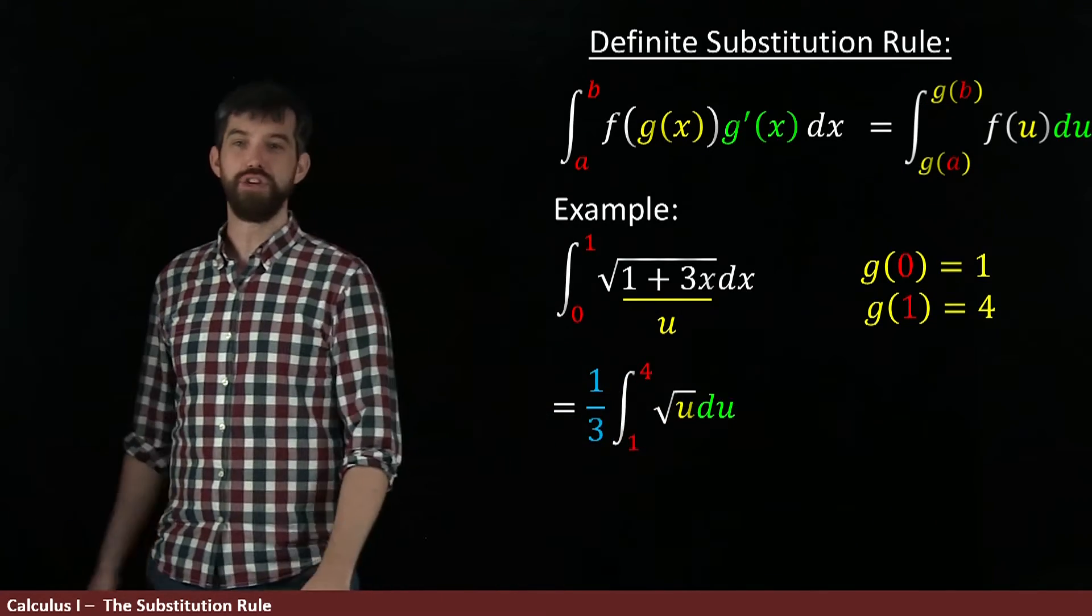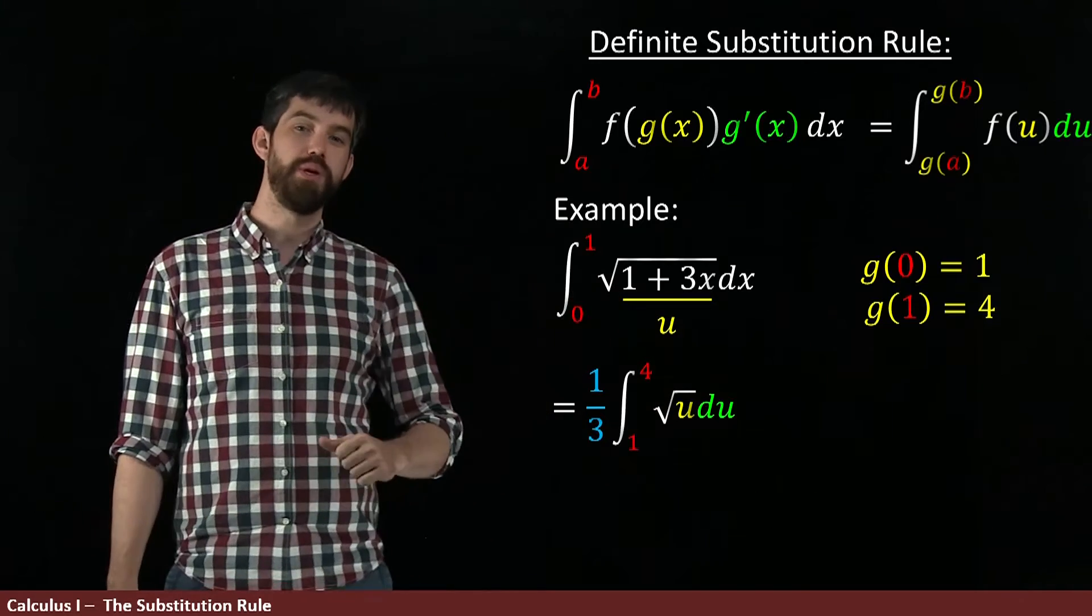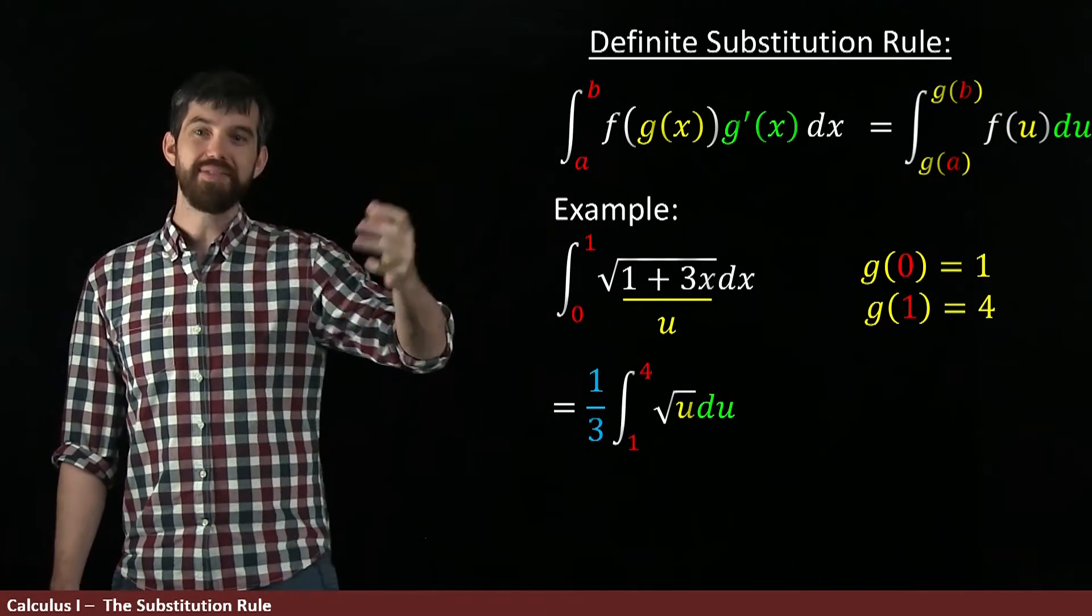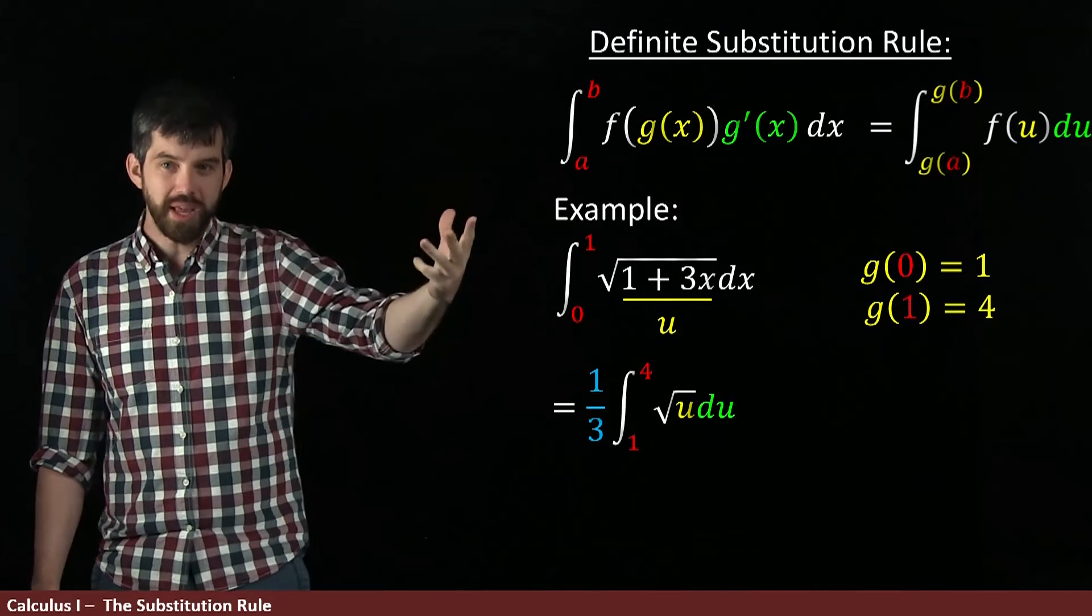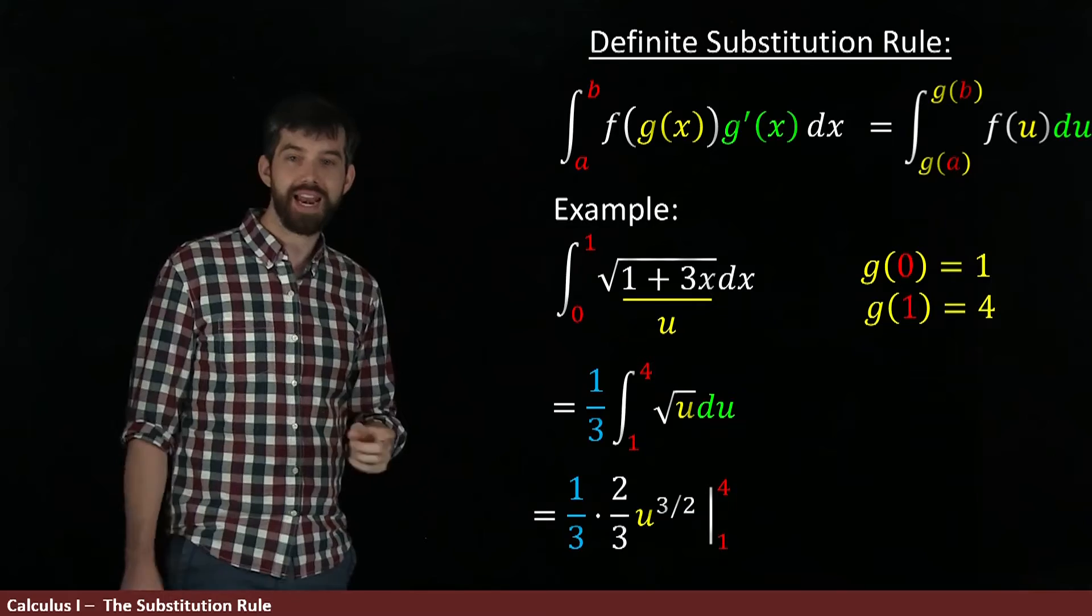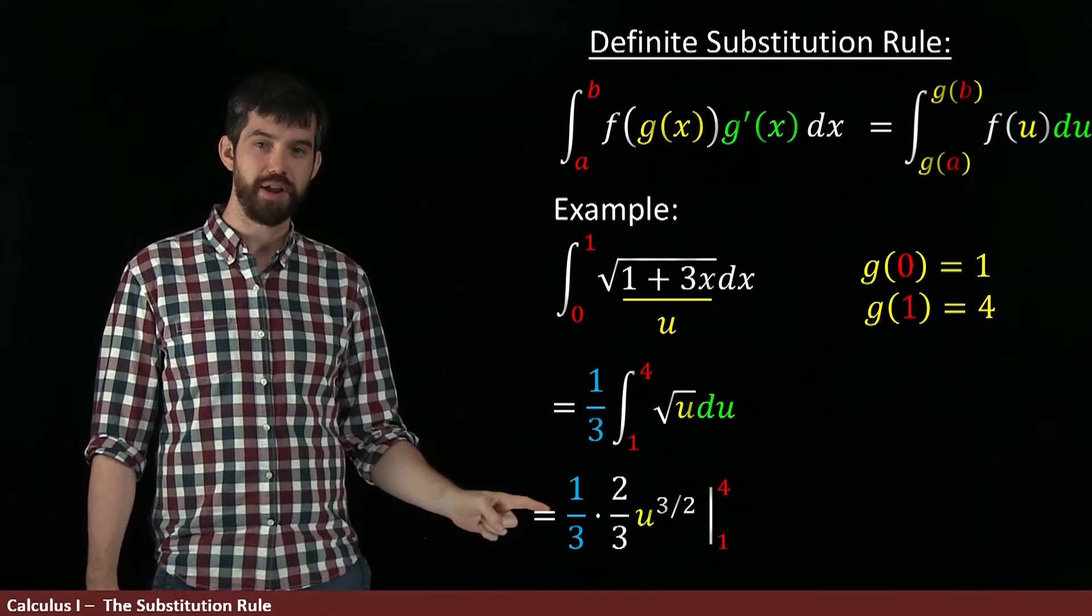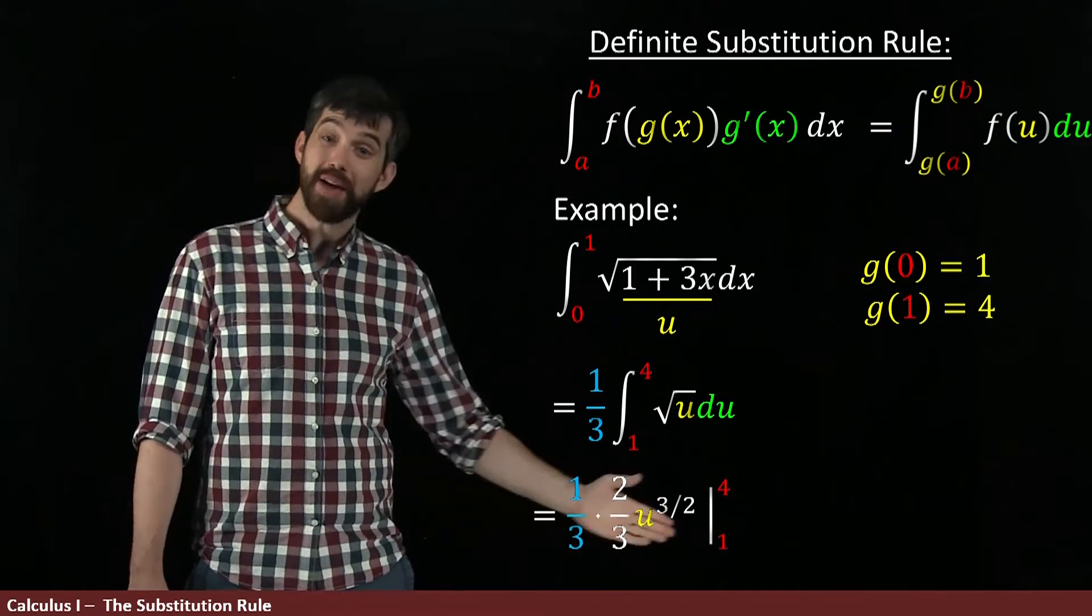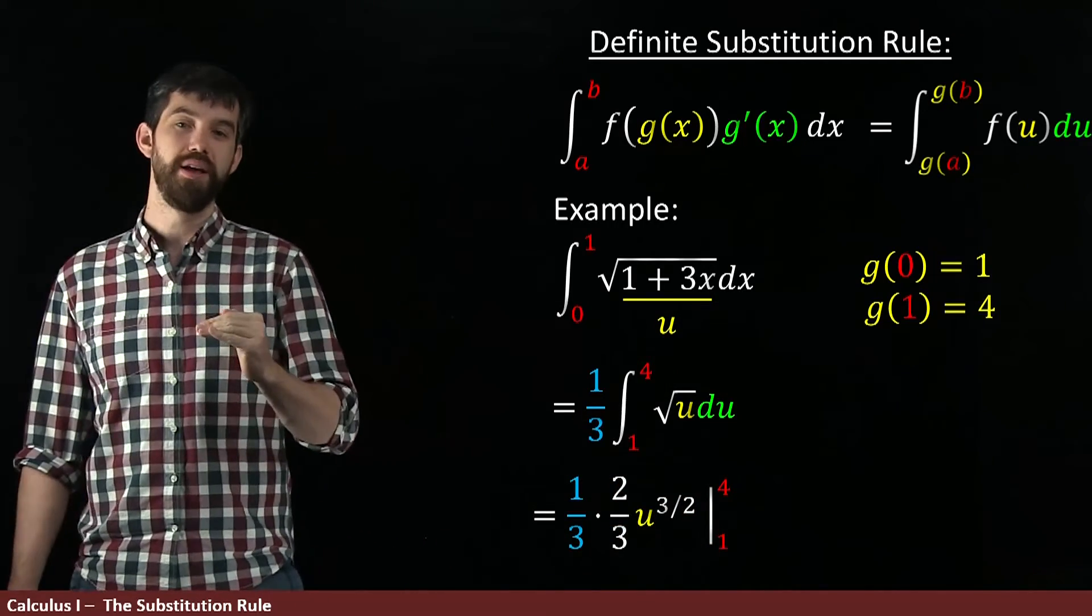And now this is an integral that we know how to do. This is just going to be some power. We can compute that. This is u to the 1 half. u to the 1 half's antiderivative is u to the 3 halves times 2 thirds. And so what I'm going to therefore get is the 1 third comes all the way out the front, and then the u to the 1 half becomes this 2 thirds u to the 3 halves. And I'm evaluating it between 1 and 4.